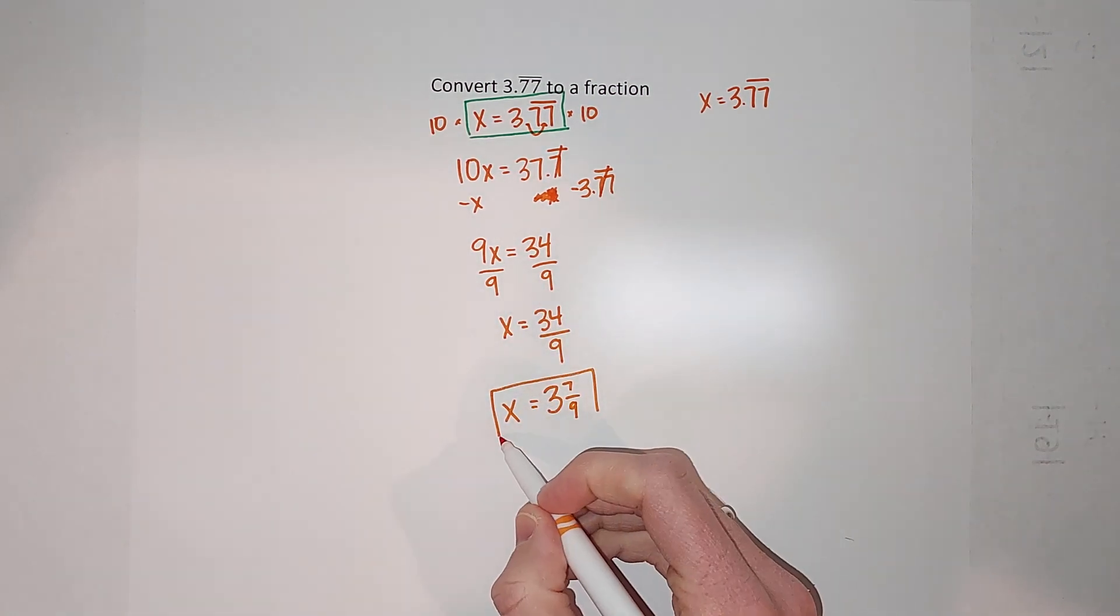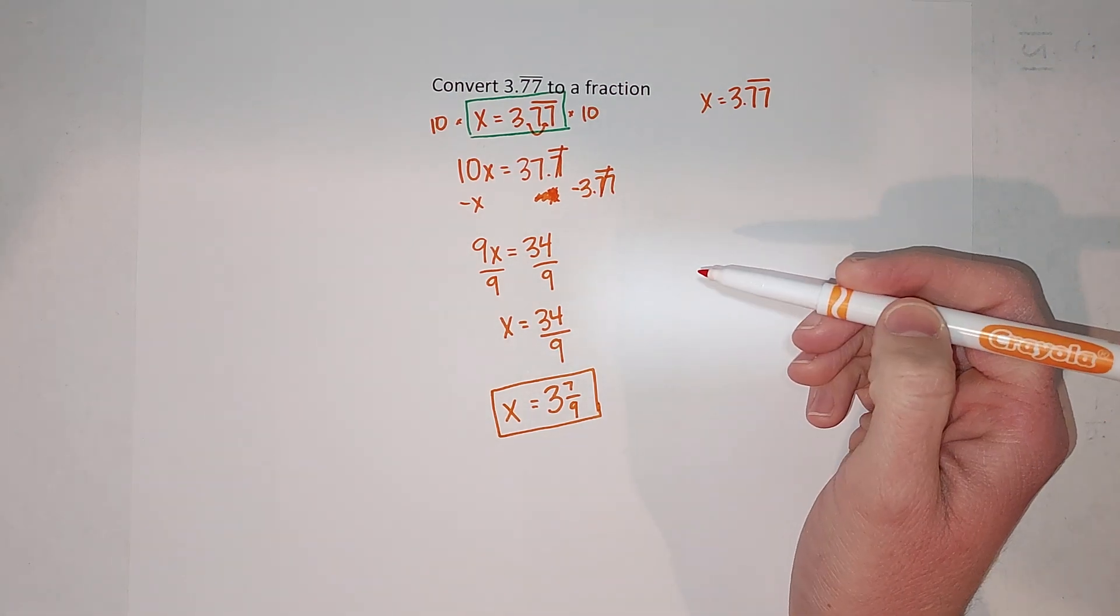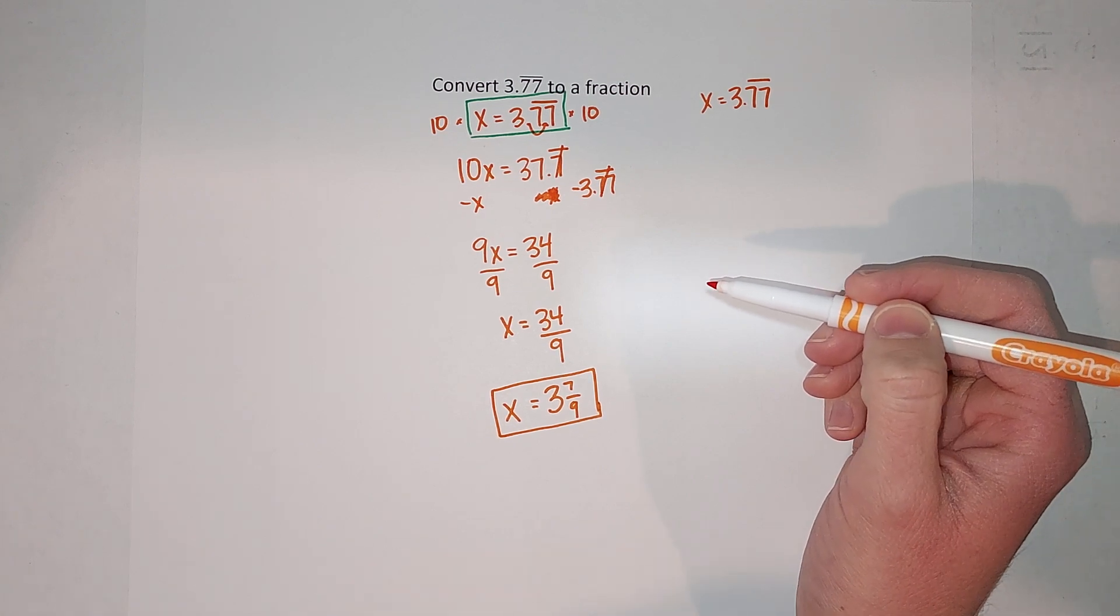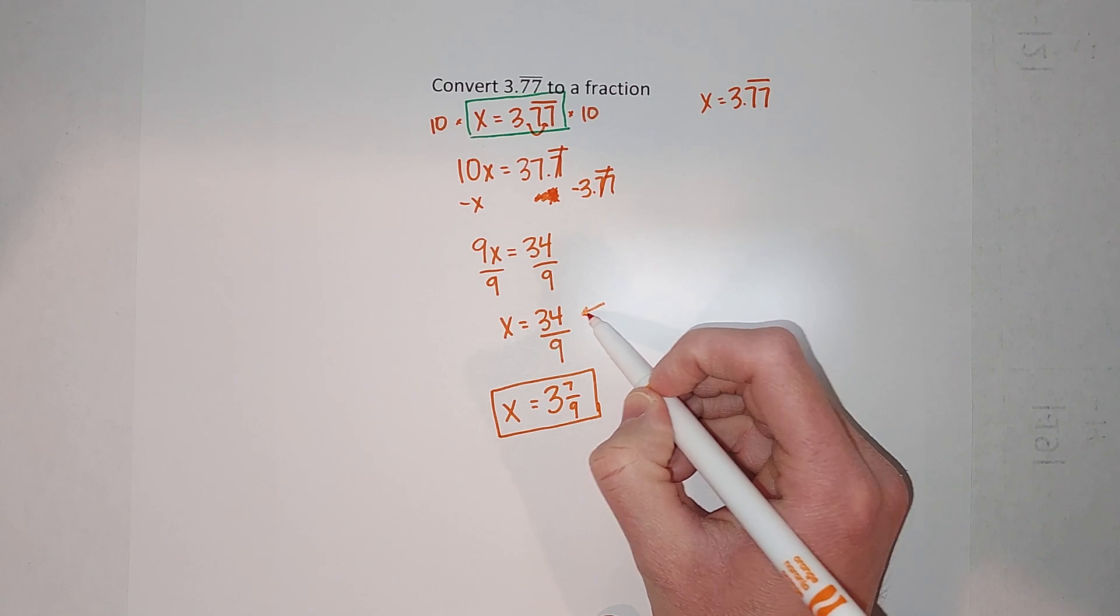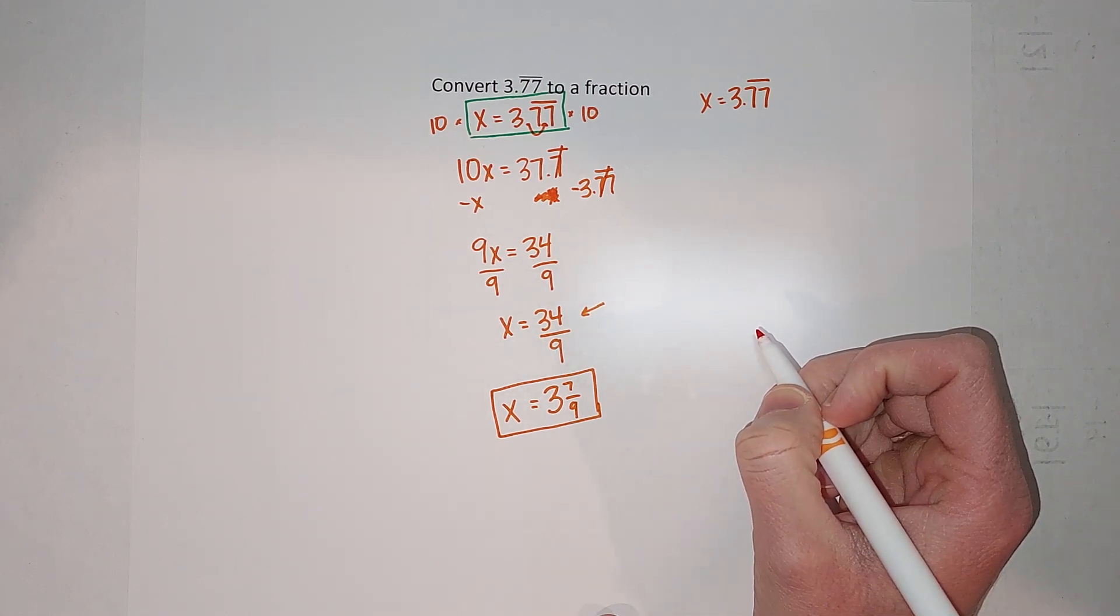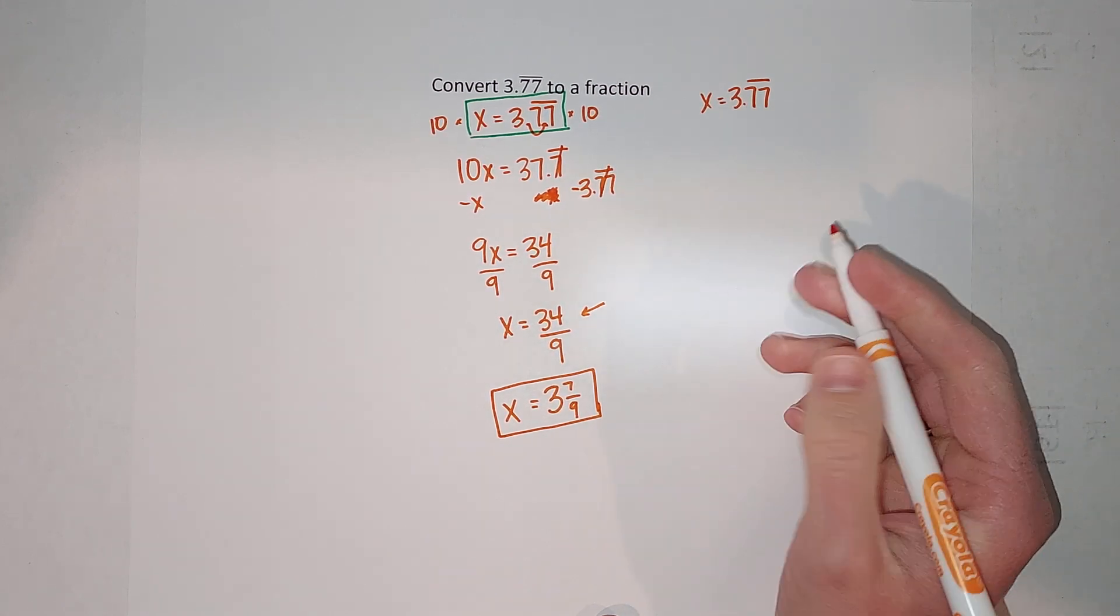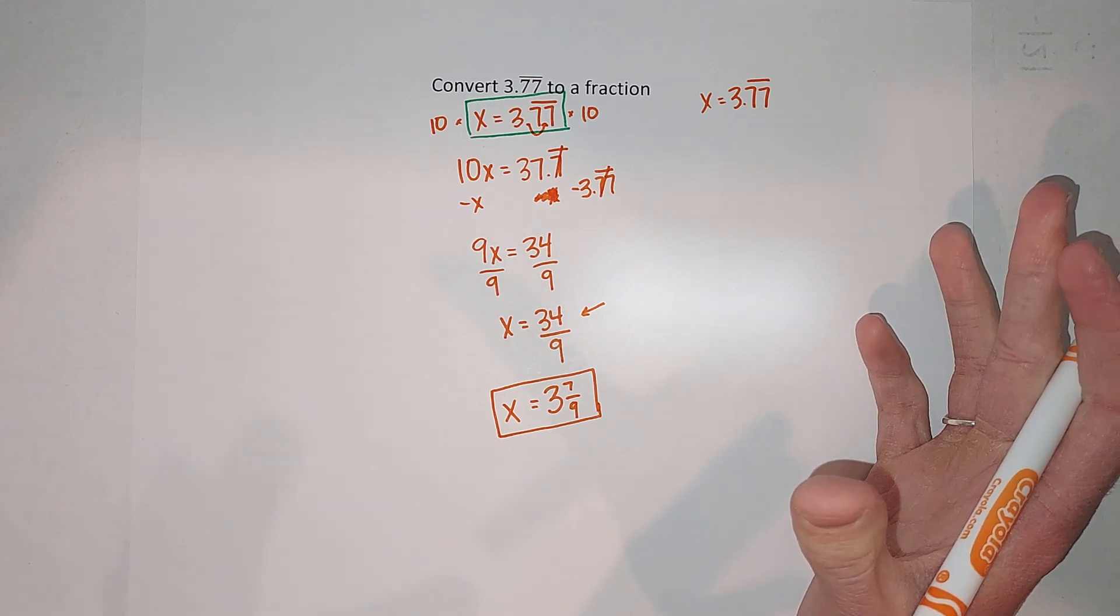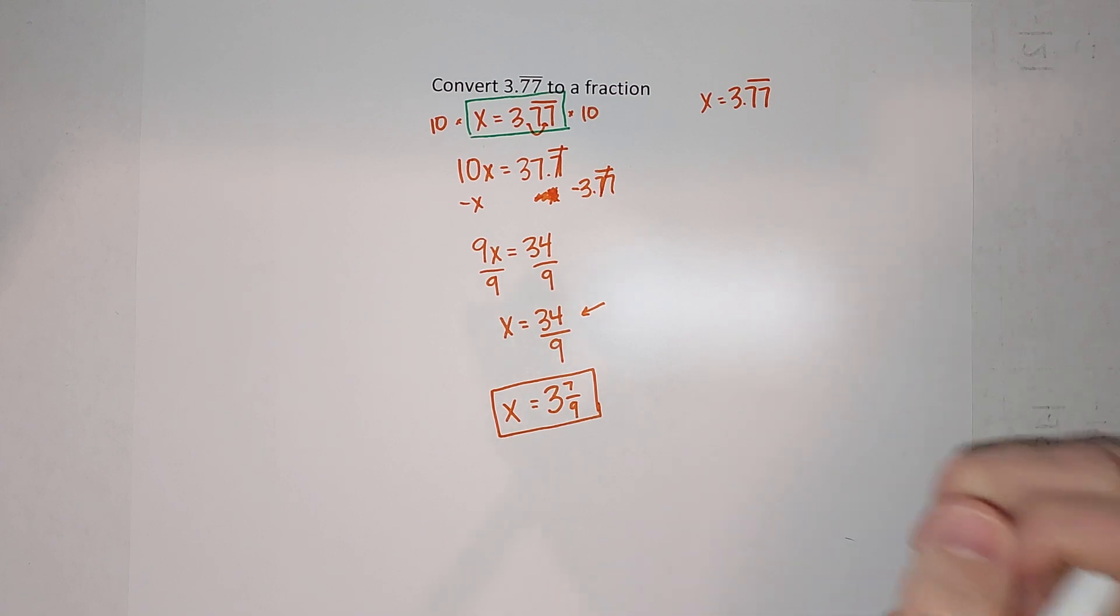But always, always, always—I love to say this guys—one of the things I love about math is there's usually a way to check yourself. So plug this into your calculator, 34 divided by 9, and make sure you get 3.7 repeating. Your calculator can't have it go on forever so it'll probably round it, but you get the idea. Hopefully that made sense and you can get your work done. Bye bye.